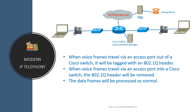Here is how it works. When voice frames traverse via an access port out of the Cisco switch, they will be tagged with an 802.1Q header. When the voice frames traverse via an access port into a Cisco switch, the 802.1Q header will be removed. The data frames will be processed as normal.